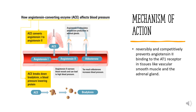Olmesartan belongs to the angiotensin-2 receptor blocker, ARB, family of drugs, which also includes Telmisartan, Candesartan, Losartan, Valsartan, and Irbesartan. ARBs selectively bind to angiotensin receptor 1 (AT1) and prevent the protein angiotensin-2 from binding and exerting its hypertensive effects. As the principal pressor agent of the renin-angiotensin system, angiotensin-2 causes vasoconstriction, stimulation of synthesis and release of aldosterone, cardiac stimulation, and renal reabsorption of sodium. Olmesartan blocks the vasoconstrictor effects of angiotensin-2 by selectively blocking the binding of angiotensin-2 to the AT1 receptor in vascular smooth muscle. Its action is therefore independent of the pathways for angiotensin-2 synthesis.